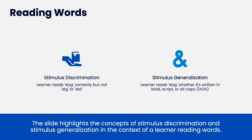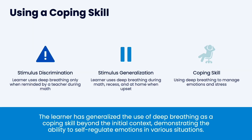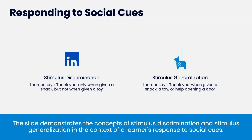Reading words — discrimination: the learner says dog correctly but not dig or dot. Generalization: the learner reads dog whether it's written in bold, script, or all caps. Coping skills — discrimination: the learner uses deep breathing only when reminded by a teacher during math. Generalization: the learner uses deep breathing during math, recess, and at home when upset. The learner says thank you when given a snack, toy, or when someone opens the door. You can see there are ways you might need both generalization and discrimination for different stimuli for the same concept.